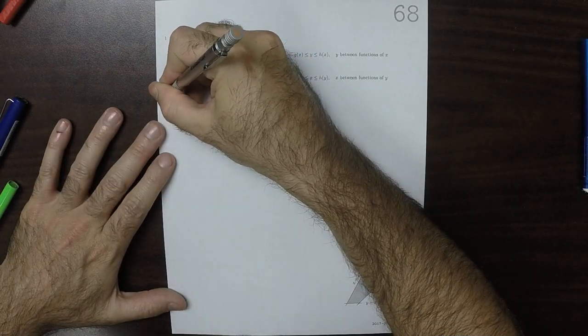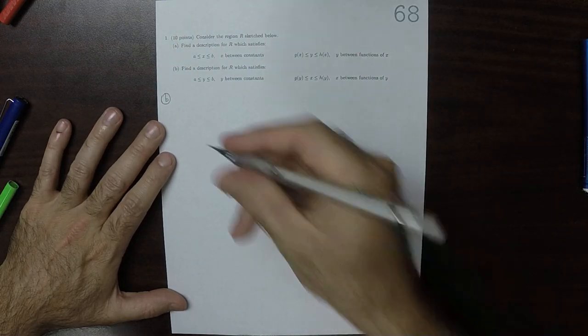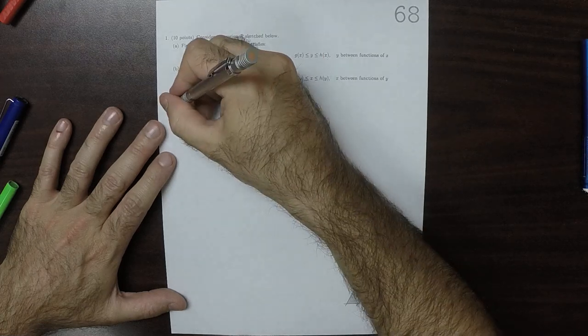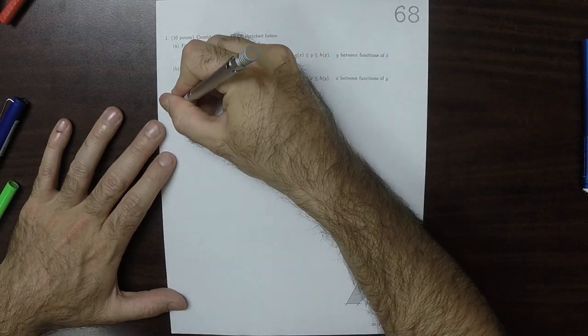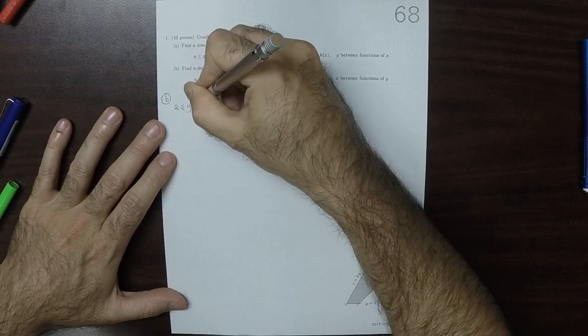For part B, part B is pretty easy, actually. You have Y between two values, so that would be 2 is less than or equal to Y is less than or equal to 6.